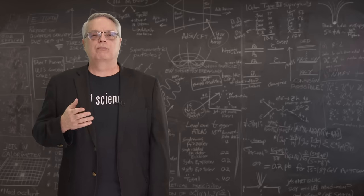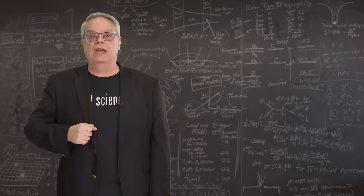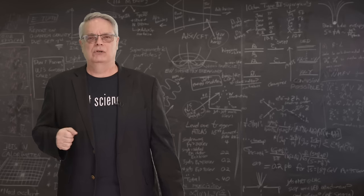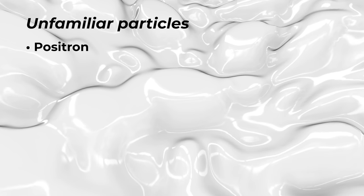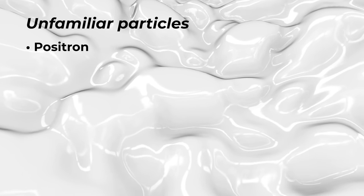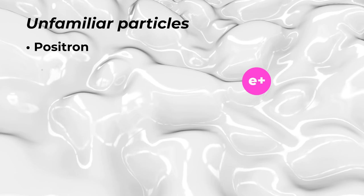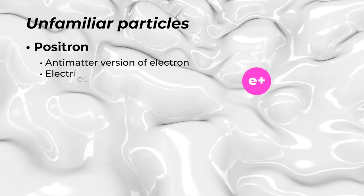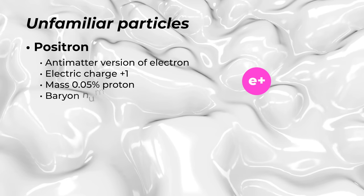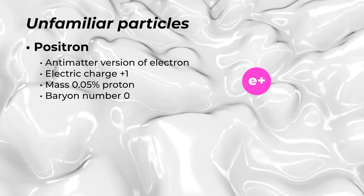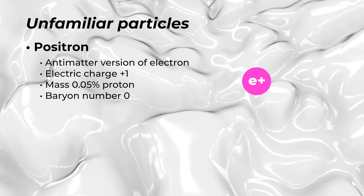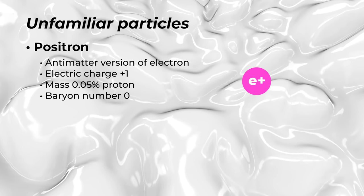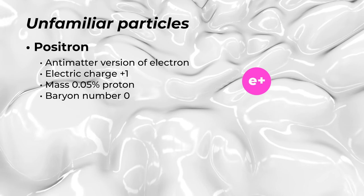Now let's think about proton decay. To do that, we need to introduce two particles that are well known to particle physicists, but are not common knowledge. The first is called the positron. The positron is the antimatter equivalent of the electron, and the positron has plus one charge, just like the proton. The positron is also much lighter than the proton, like 0.05 percent the mass of the proton. Because the positron isn't a baryon, it has a baryon number of zero.